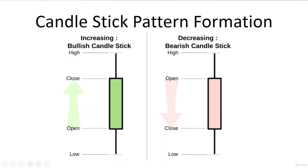For revision, we are again understanding candlestick formation in detail. As shown on your screen, there are two candlesticks — one green and one red. If the closing price is above the opening price, it shows a bullish candle, also called a green candle. The thin lines above or below the candle's real body are considered shadows.